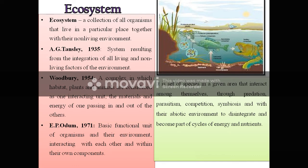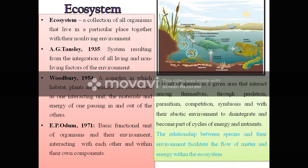In the picture I have shown you the pond or aquatic ecosystem. An ecosystem is a set of species in a given area that interact among themselves through predation, parasitism, competition, and symbiosis, and with their abiotic environment to disintegrate and become part of cycles of energy and nutrients. The relationship between species and their environment facilitates the flow of matter and energy within the ecosystem.